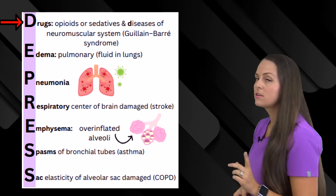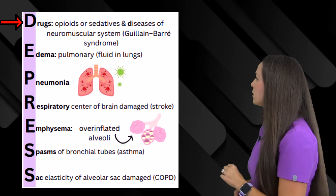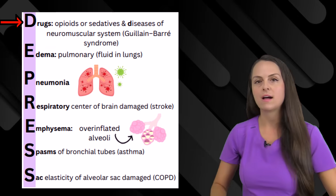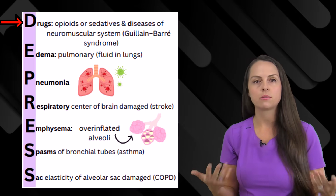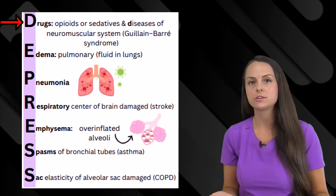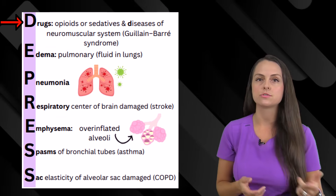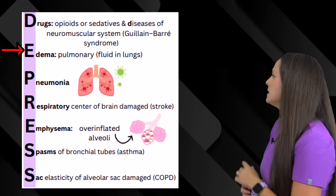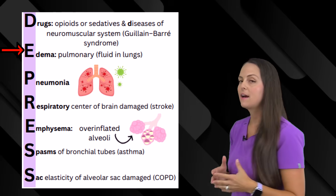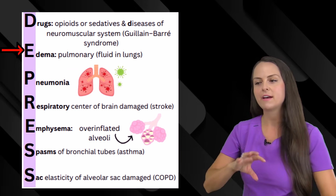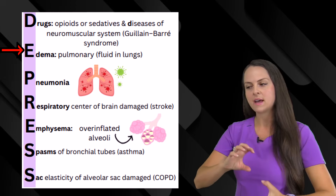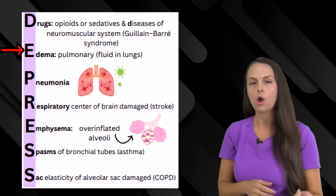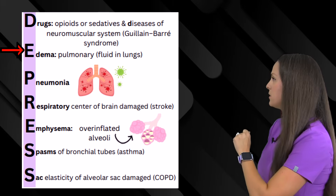Also, diseases — this goes along with the D — diseases of the neuromuscular system such as Guillain-Barré syndrome. With that, we get paralysis that extends up to our respiratory system, causing the patient not to be able to use the respiratory muscles to breathe, which will cause us to retain CO2. E is for edema, particularly pulmonary edema — this is where we have fluid in the lungs. Whenever fluid is around those alveolar sacs, it prevents proper gas exchange, which also happens with the P of our mnemonic: pneumonia.